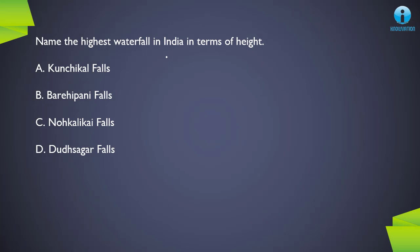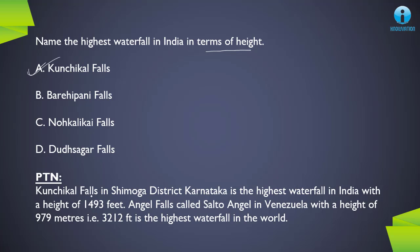Next question: name the highest waterfall in India in terms of height. The correct answer is A, Kunchikal Falls. Kunchikal Falls is in the Shimoga district of Karnataka and is the highest waterfall in India at a height of around 1,500 feet. If the question were about the world, the answer would be Angel Falls, also called Salto Angel, in Venezuela, with a height of around 979 meters or 3,200 feet — the highest waterfall in the world.